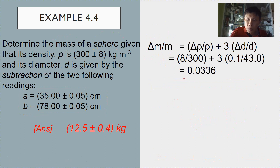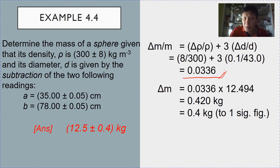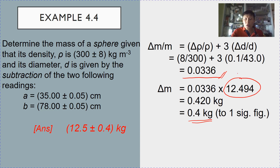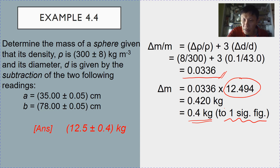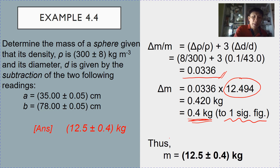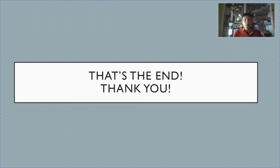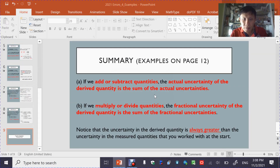The fractional uncertainty is simply the fractional uncertainty of density plus three times the fractional uncertainty of diameter, giving approximately 3.36%. Then Step 1: convert to actual uncertainty by multiplying by the value of m. Step 2: round up to one significant figure. Finally, round the value of m — 12.494 — to the same number of decimal places as the uncertainty, which is 1 dp, giving 12.5 plus or minus 0.4. That's the end — thank you, and I'll see you in my next topic.